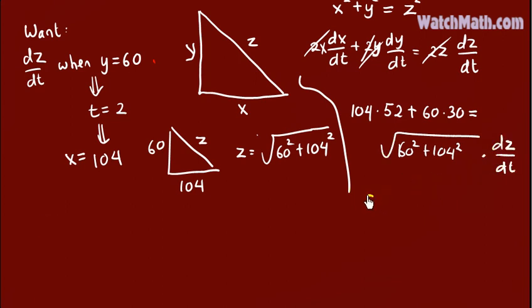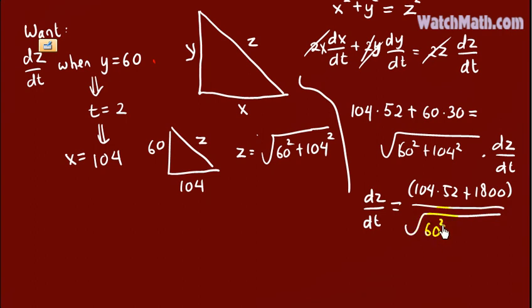Solving for dZ/dt, we have dZ/dt equals 104 times 52 plus 1800 divided by square root of 60 squared plus 104 squared. You can use your calculator to simplify or write this into decimal form.